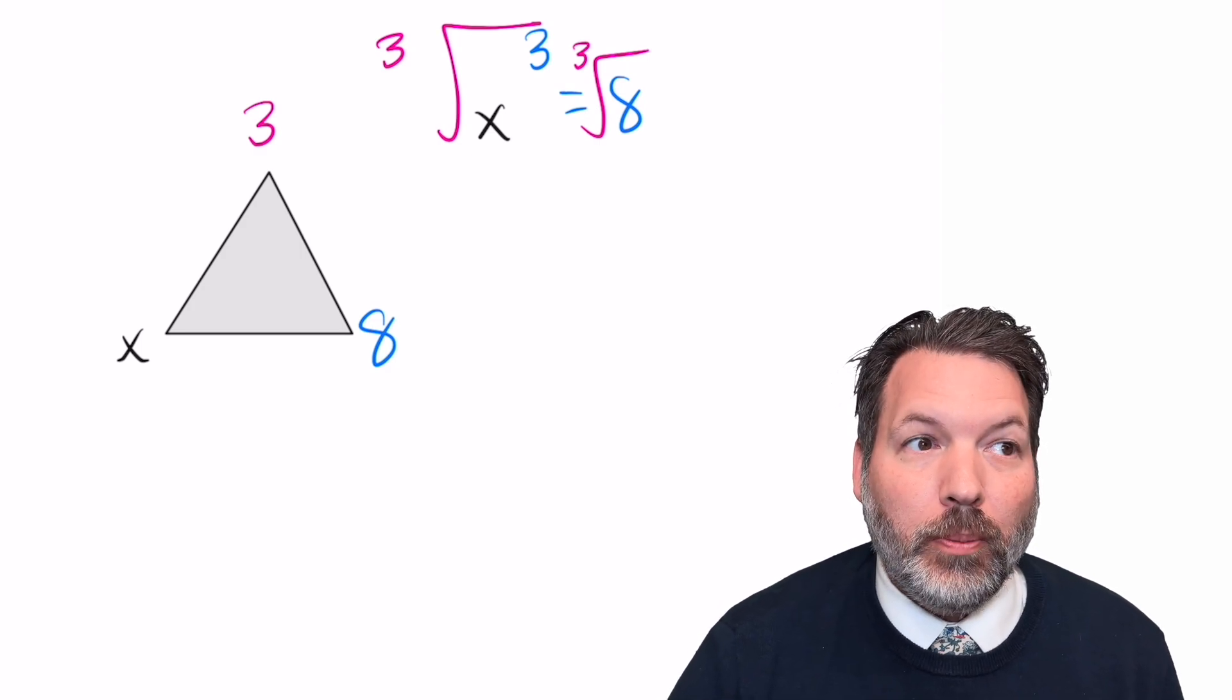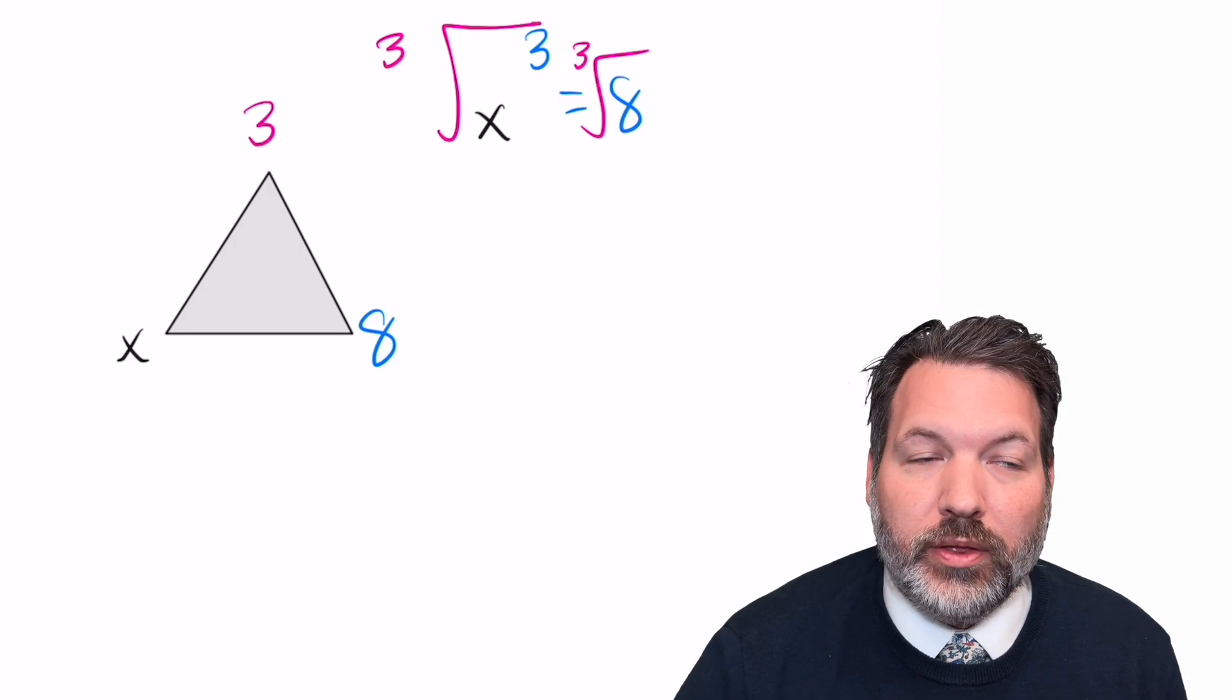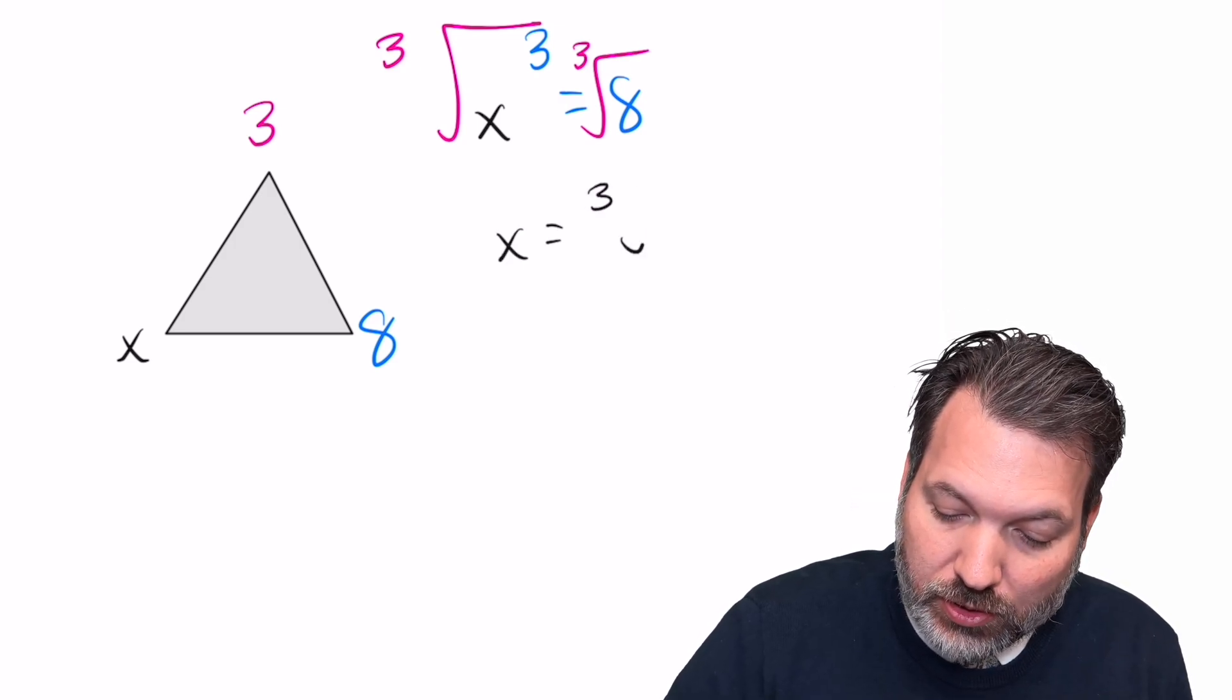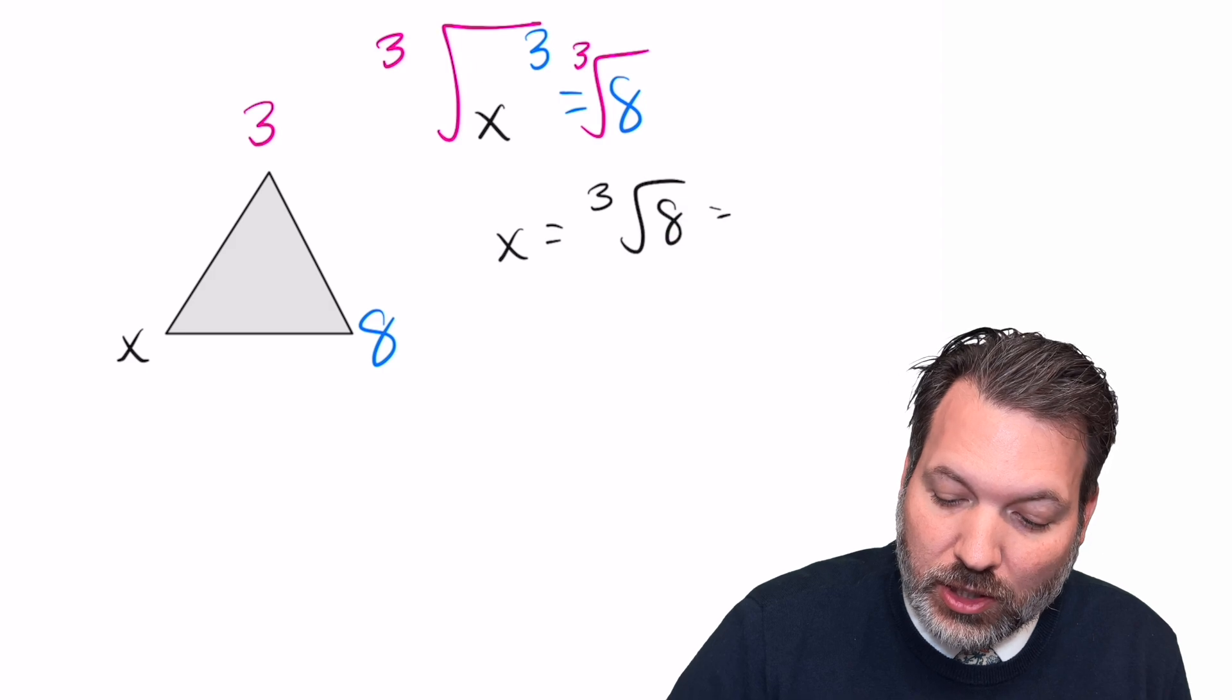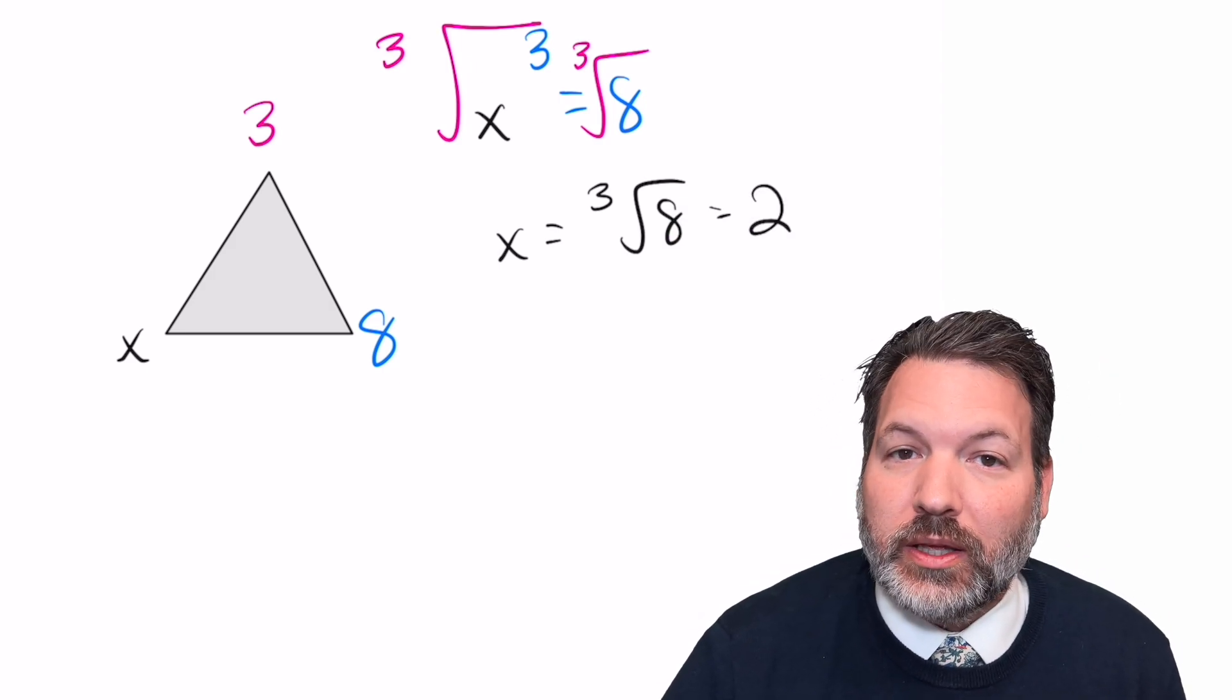That is, if it's the exponent that I know but not the base, I'm going to undo exponentiation with a root. And of course, that works fine here. It is true that in this case, x is the cube root of 8, or 2, and so we can recover the base using that root.